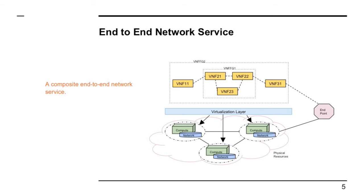End-to-end network service is provided using these network descriptors. When you launch your network service through a network orchestrator — here we refer to OpenStack Tacker — you will have multiple VNFs constituting different paths. For example, some users want HD video and some do not, so HD video users follow a different path via service function chaining and other packets follow a different path. In the backend, this constitutes service function chaining. If you use OpenStack as the virtual infrastructure, all VNFs and VDUs are deployed in the OpenStack compute nodes.